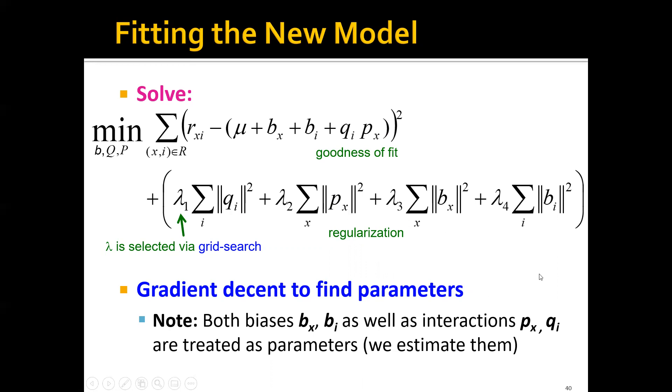As always, we can use gradient descent to find the parameters. Note that here, both the biases, bx and bi,